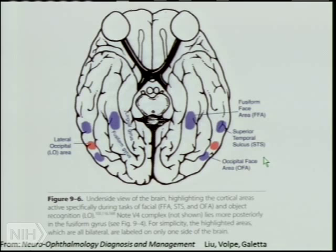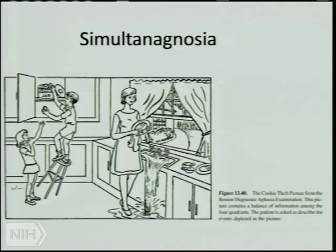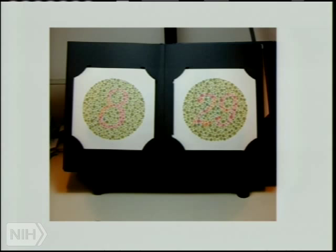Simultanagnosia means being unable to take in a whole scene. In the cookie thief picture, a patient with simultanagnosia will fixate on one thing — say the mother washing dishes — and can't notice anything else. They have a very narrow spotlight of attention, not a narrow visual field. This comes up in color vision testing — they'll fixate on a few dots and can't see the number in the whole pattern. They can't get the big picture.